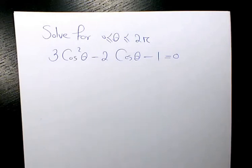What's up guys, this is Masi, welcome to my channel. In this video you will learn how to solve this trig equation. The trig equation is 3 cosine squared theta minus 2 cosine theta minus 1 equals 0, and theta must be between 0 and 2π.